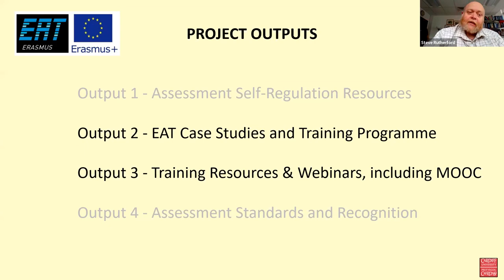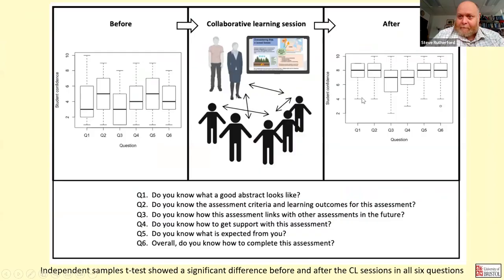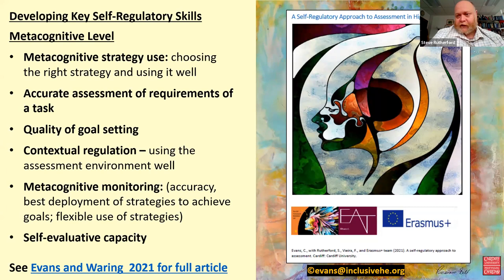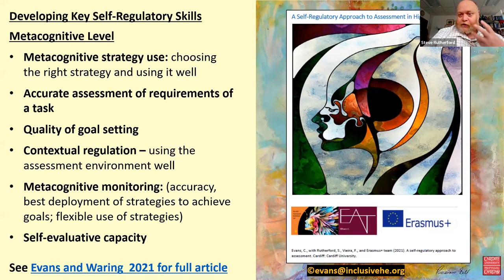There are four major outputs within this project. One of them is a self-regulation report that the project has produced. It's on our website and it's very dense — it's got a huge amount of stuff about self-regulation and how we can use self-regulation in assessment to support student development. It's got one-page summaries of research papers, and it really distils a lot of those ideas down. It's free to use and adapt — under a Creative Commons license.